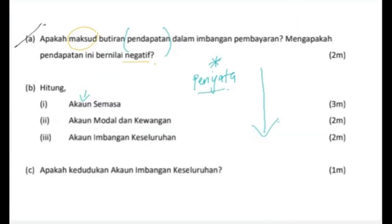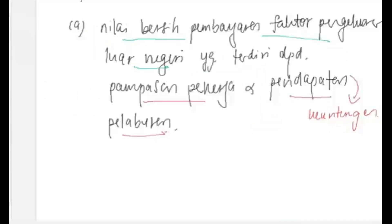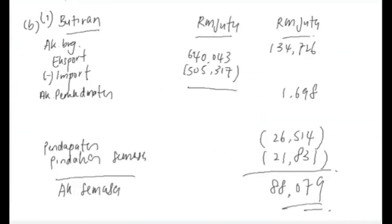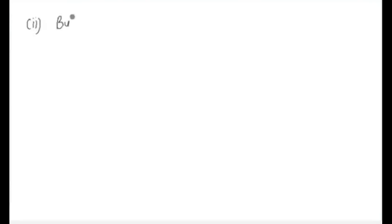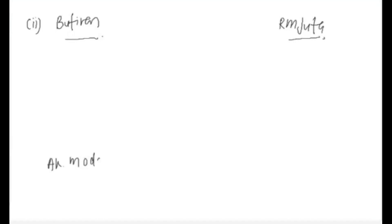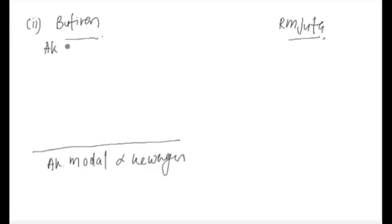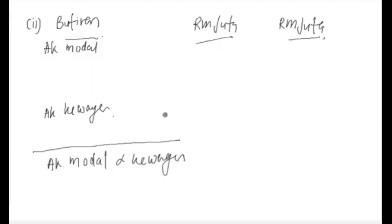Kita sambung soalan B roman dua — dia nak akaun modal dan kewangan. Juga sama, anda kena tulis putiran diikuti dengan RM juta. Biasakan diri ya. Lepas itu dia nak kita cari akaun modal dan kewangan. Kita ada akaun modal dan lagi satu kita ada akaun kewangan. Nanti anda buat pengiraan, tambahkan satu lajur lagi untuk buat pelarasan.